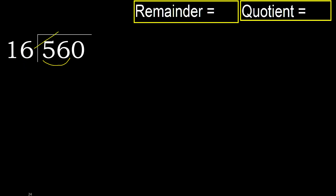16 multiplied by which number is nearest to 56 but not greater? 16 multiplied by 4 is greater. 16 multiplied by 3 is 48. 48 is not greater, so subtract: 56 minus 48 equals 8.